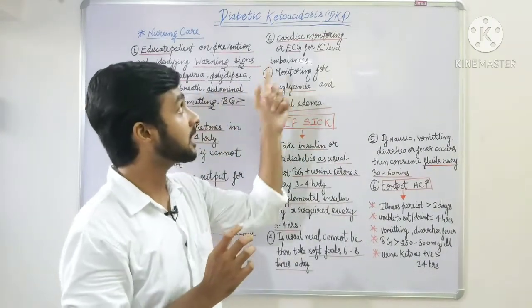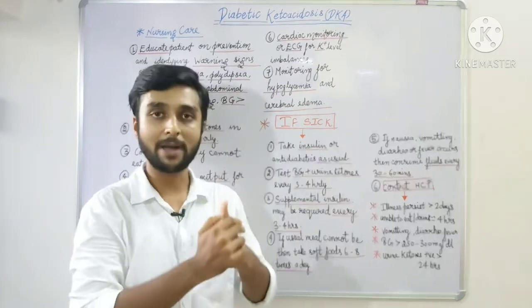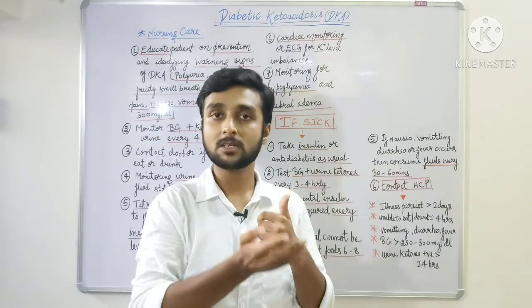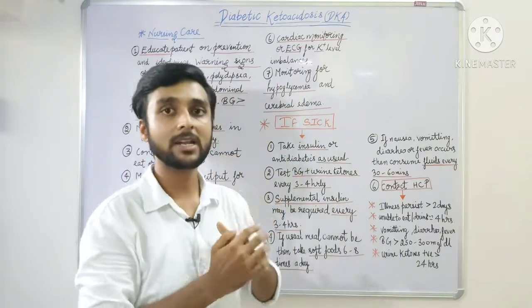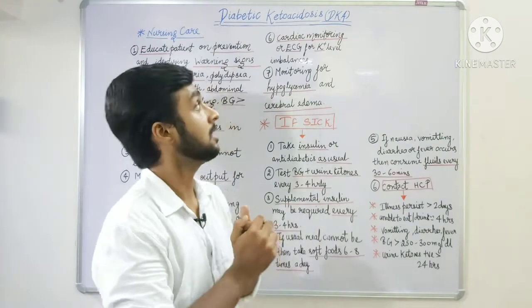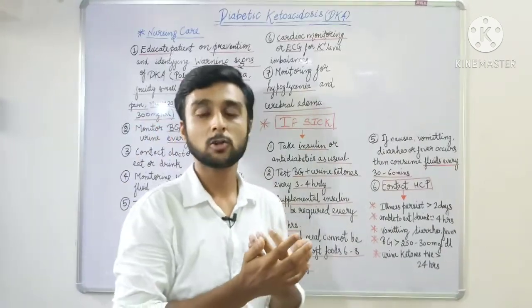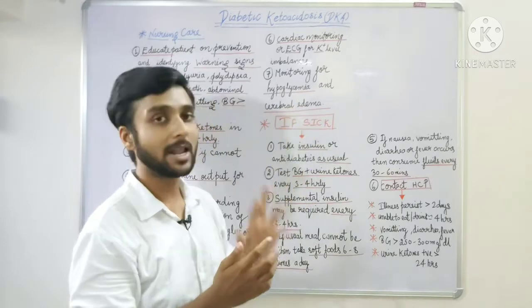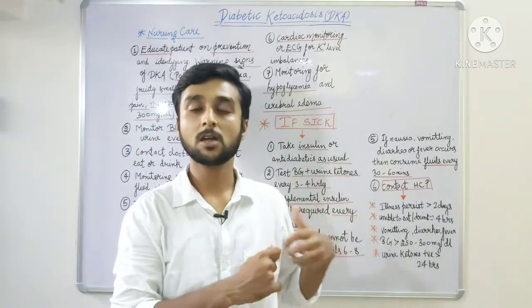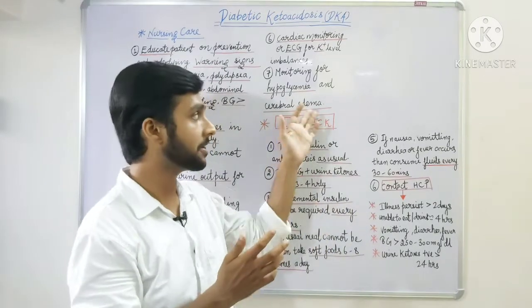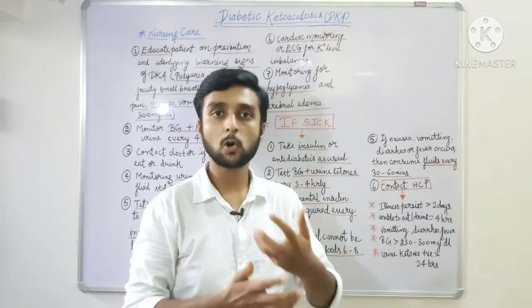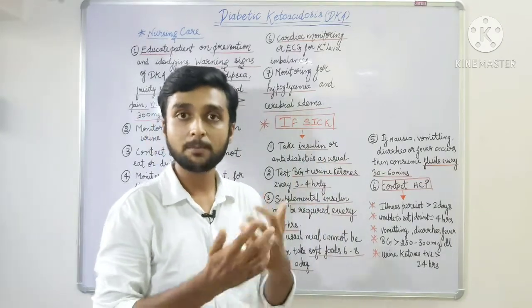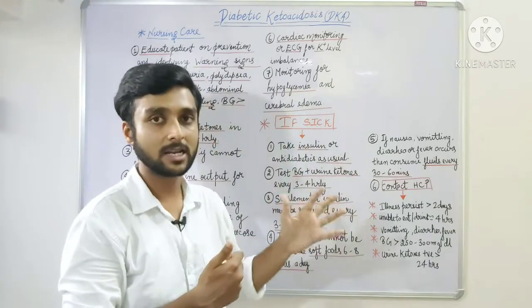Next, perform cardiac monitoring or ECG monitoring of the patient for potassium level imbalances. After insulin, the patient can go into hypokalemia, and in acidosis potassium levels shift — so we must monitor to prevent cardiac dysrhythmias. Also monitor for hypoglycemia since we are administering insulin. Monitor the patient's level of consciousness. If the patient is sick or has an illness, blood glucose levels increase, and insulin needs to increase accordingly.